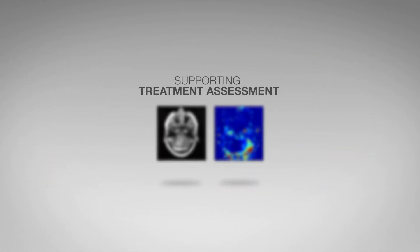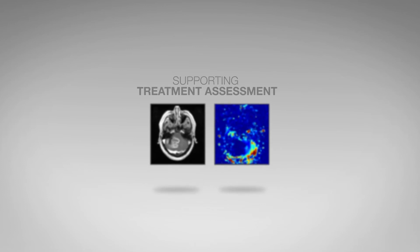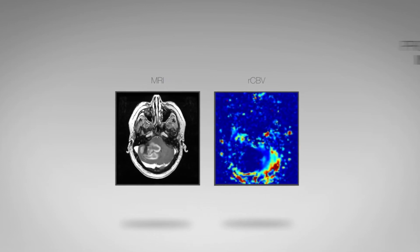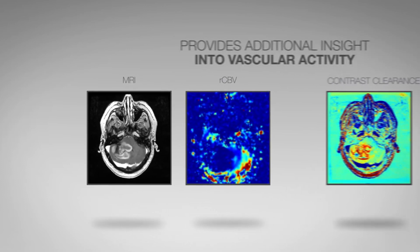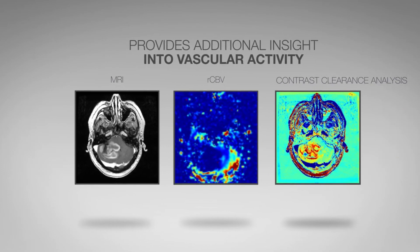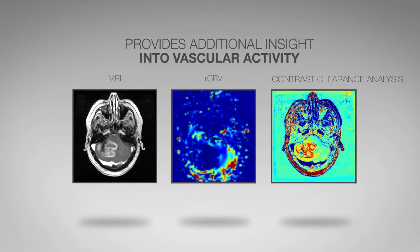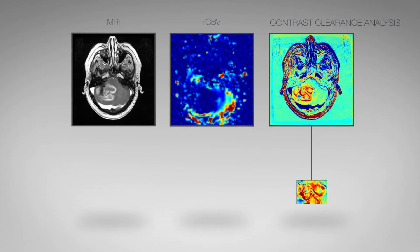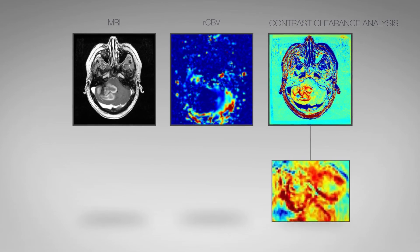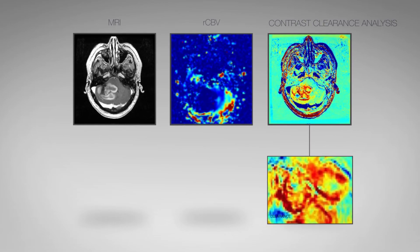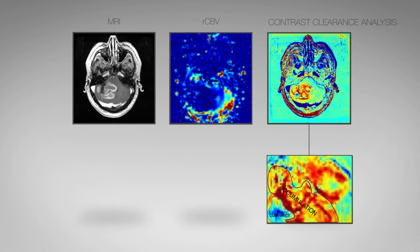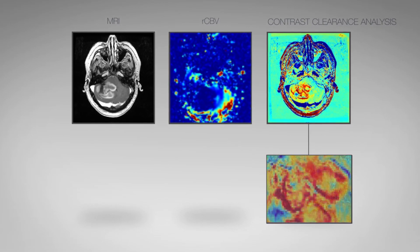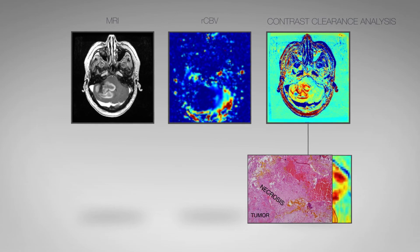In many cases an MRI does not provide conclusive information on tissue status. Disregarding the grayscale and bringing forward a high resolution colour image visualises significant changes in vascular activity, assisting the clinician in treatment assessment alongside other methods.